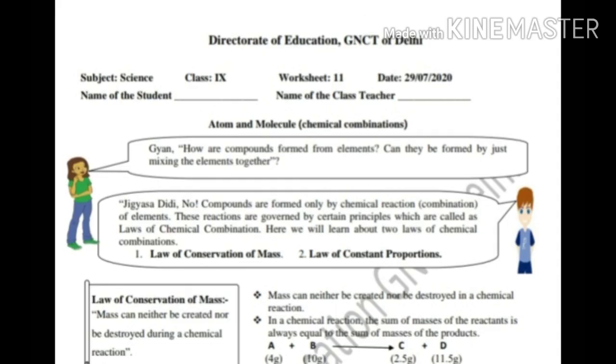Here we see that Chikyasa, elder sister of Gyan, asks her brother how compounds formed from elements can be formed by just mixing the elements together. Then Gyan tells her no, compounds are formed only by chemical reaction of elements. These reactions are governed by certain principles which are called laws of chemical combination. Here we will learn about two laws of chemical combinations.